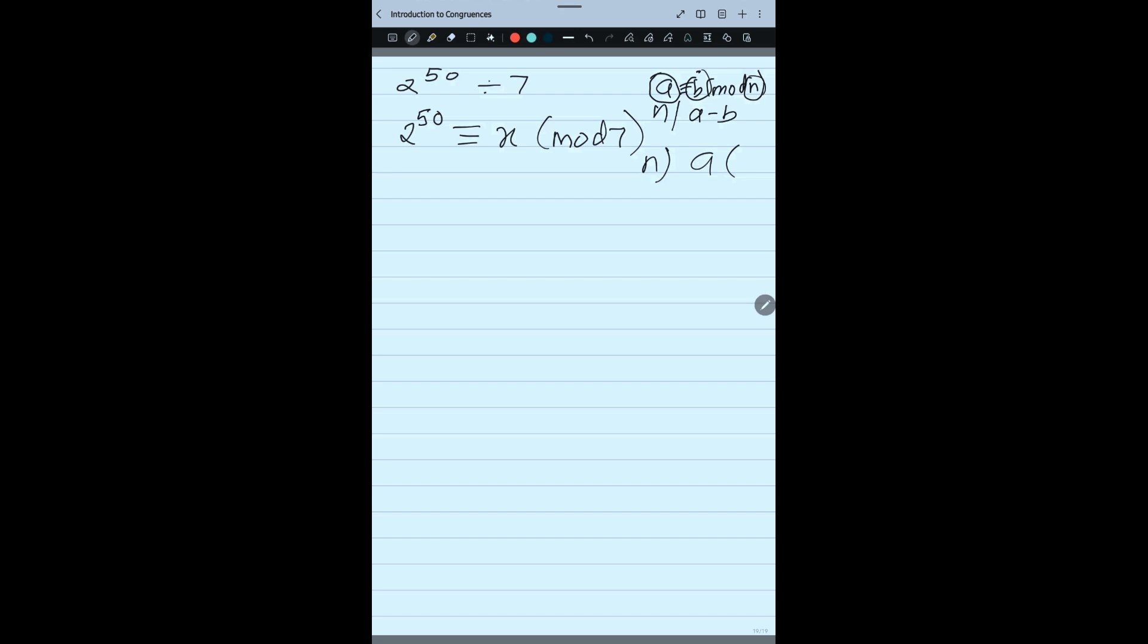Understood? When I am saying find the remainder when 2 to the power 50 is divided by 7, this is how I should write the question. And now what you have to do, you need to figure out the value of x so that 7 divides 2 to the power 50 minus x. Now what is the problem here? Problem here is that 2 to the power 50 is a huge number. Now when 2 to the power 50 is a huge number, I need to split it into small numbers and then I have to apply the properties.